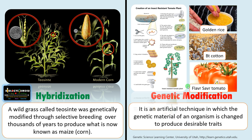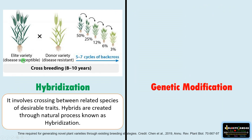So a gene is introduced or silenced to get a desirable trait — it is an artificial technique where genetic manipulation is the basis. Hybridization involves crossing between related species with desirable traits. Hybrids are created through a natural process. For example, this is a variety that is disease susceptible and the donor variety is disease resistant. We cross these two to get a variety that is disease resistant. This is a natural process mediated by artificial selection by humans, producing hybrids with the desirable trait of disease resistance.